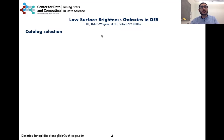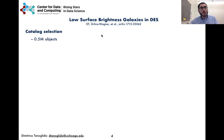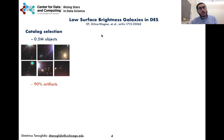First, we selected objects from the full catalogue based on their radius, brightness, and some other criteria. However, from about half a million candidates, 90 percent were artifacts like those you can see here — small objects blended in the light of nearby stars and galaxies.